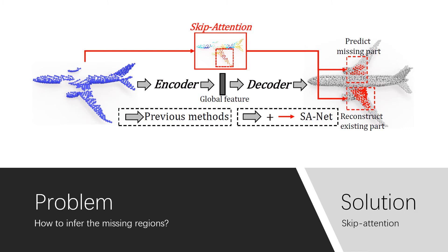In this paper, we propose a structure called skip attention, which can directly convey the local region features of incomplete shapes into the decoder network and help the decoder to better infer the geometries in the missing regions of incomplete point clouds.